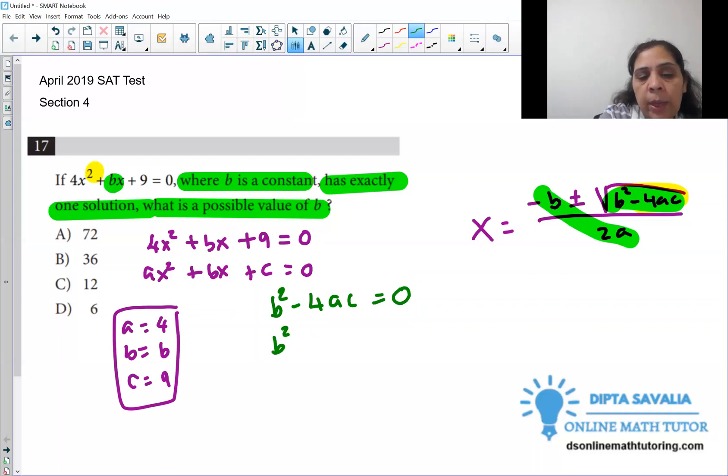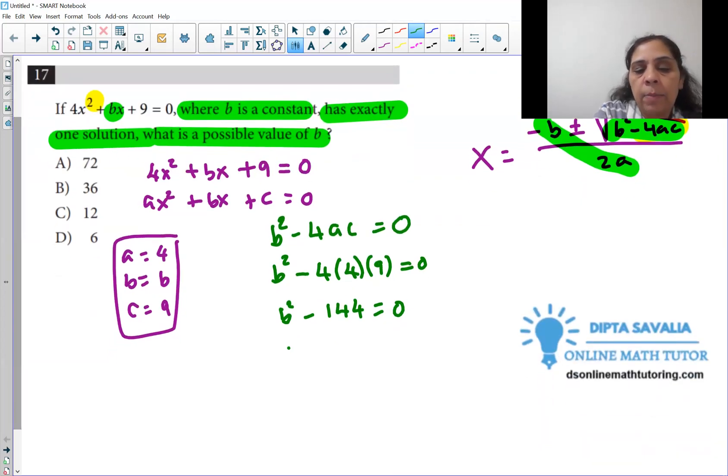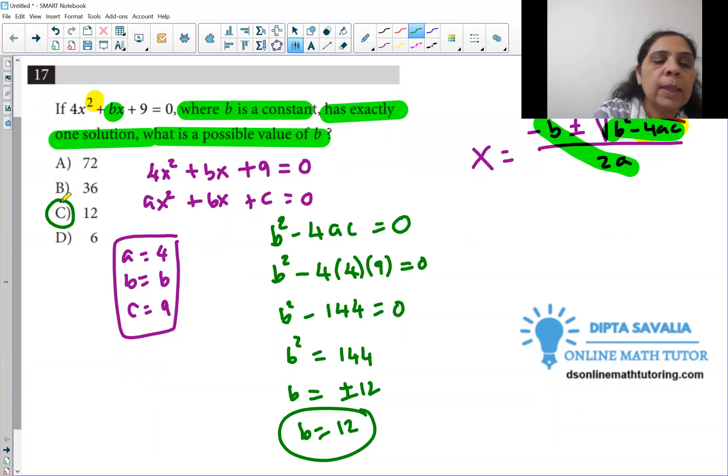So we will just plug in this value. B is b, b² minus 4a is 4, and c is 9 equals zero. So now we have an equation with one variable. We can just solve for b. And that is our answer. So b² minus 4 times 4 is 16, and 16 times 9 is 144 equals zero. So now we can solve for b. So you will get b² equal, you can add 144 on both sides, and then you can do square root. Square root of 144 is plus or minus 12. We have only positive values. So we will choose here b is positive 12. That is our answer.